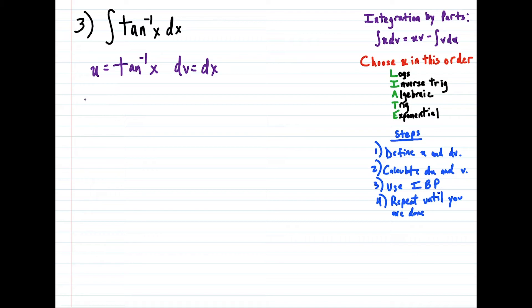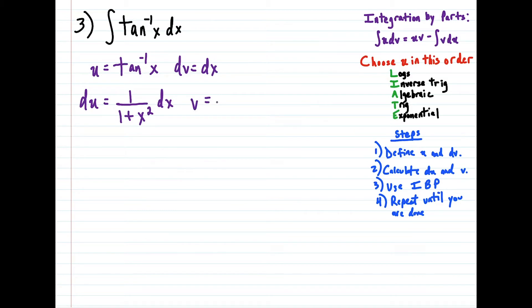And then we're going to calculate du, which is equal to 1 over (1 + x²) dx. And v — the antiderivative of dx — is just x, because it's kind of like asking what's the antiderivative of 1, which is just x. So now steps one and two are done.